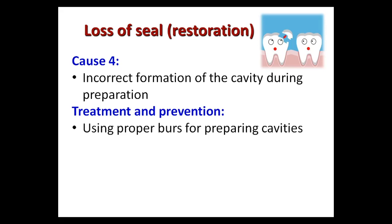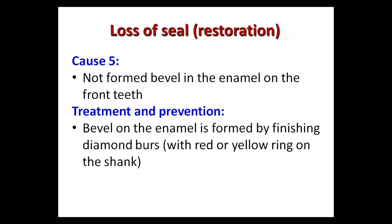Cause number four is incorrect formation of the cavity during preparation. Prevention requires using proper burs for cavity preparation. Cause number five is the absence of a formed bevel in the enamel, for example on front teeth. The bevel on the enamel is formed using finishing diamond burs with a red or yellow ring on the shank.